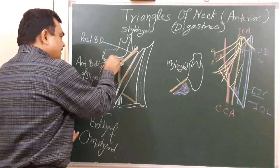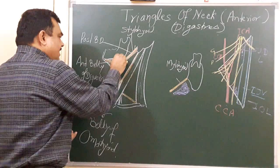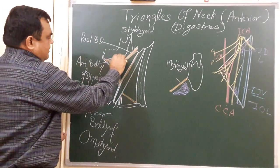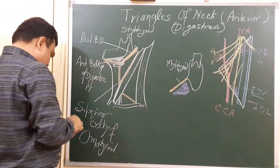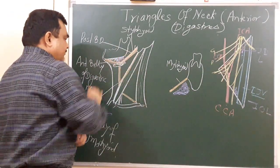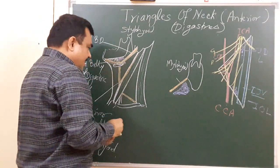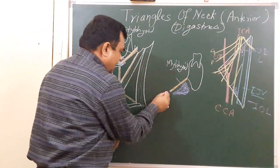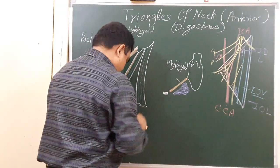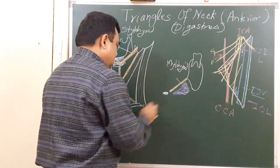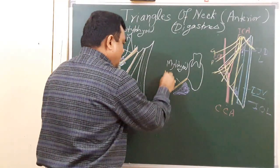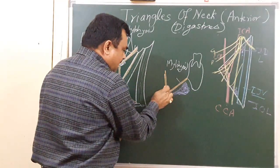So mylohyoid anteriorly and hyoglossus posteriorly form the floor of this triangle. This is hyoglossus. Here is also the mylohyoid muscle — this is the mylohyoid muscle — and this is the hyoglossus.